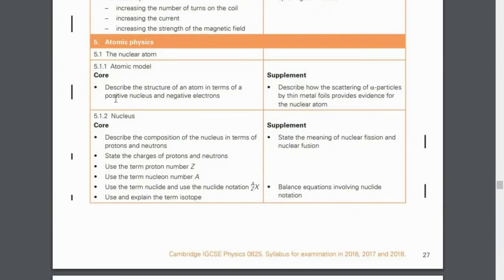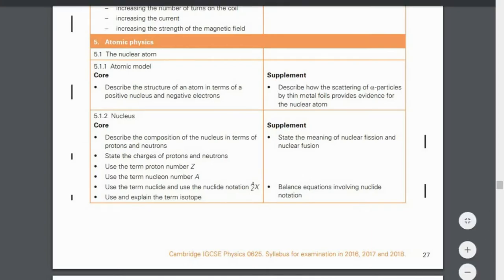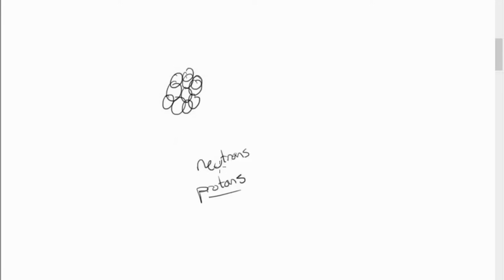Let's start with the Atomic Model. Describe the structure of an atom in terms of a positive nucleus and negative electrons. The current model of the atom is that you have a nucleus which consists of nucleons. Nucleons are basically a combination of neutrons and protons — neutrons and protons together make the nucleons.